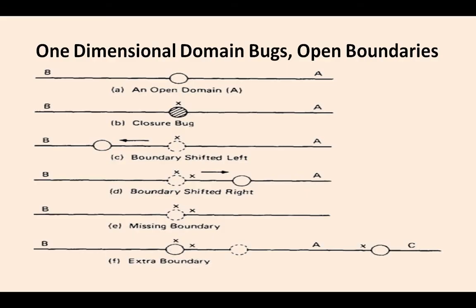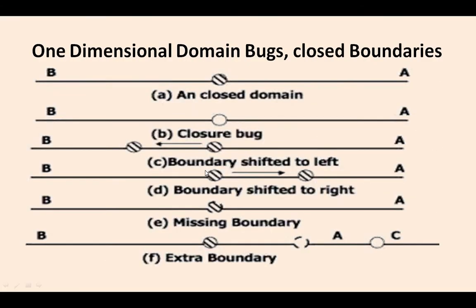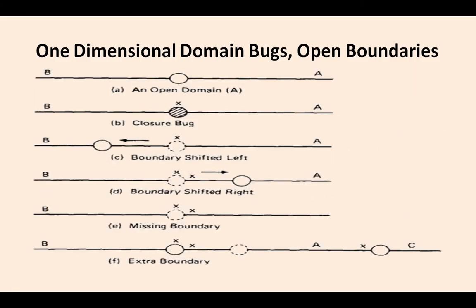All these points we have discussed are all on the domain. Now we are going to discuss off points of the domain. The point lying on the boundary is called the boundary point; the point lying adjacent to the boundary is called the off point. The rest of the cases are similar to open boundary except the strategy now requires off points just outside of the domain. These are the various kinds of errors: open domain bugs — closure bugs, boundary shifted to left and right, missing boundary, and extra boundary.